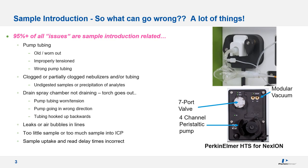As most of you attending this talk know, a lot of things can go wrong along the way. The key message I would like to communicate today is that 95% or more of the things that can go wrong leading to problems with your results are typically sample introduction related. By sample introduction, I mean everything that happens before the sample actually makes it into the plasma. This could be old, worn, or improperly tensioned pump tubing causing erratic delivery of your sample to the plasma.